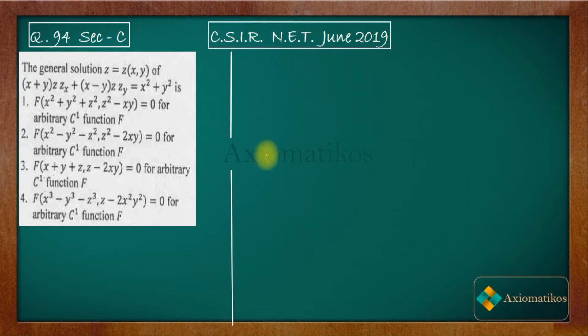Let us have a look. The general solution Z equals Z(x,y) of this PDE is... So you have these options in your hand and the problem is given to us for which we have to find out the solution: (x+yz)·Zx + (x-yz)·Zy = x² + y².